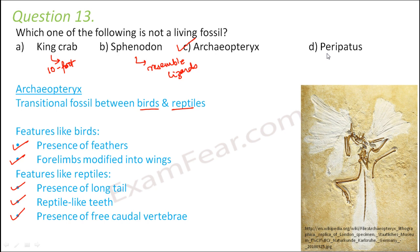Peripatus is another living fossil which is a link between annelids and arthropods — it has certain characters similar to annelids and certain characters similar to arthropods. A living fossil means any living species of organisms that appears to be the same as a species only known from fossils, and has no close living relatives.